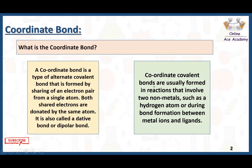Coordinate covalent bonds are usually formed in reactions that involve two non-metals such as a hydrogen atom, or during bond formation between metal ions and ligands. Coordinate bond can be observed in different types of atoms, which is why it is very diverse and plays an important role in coordination chemistry.